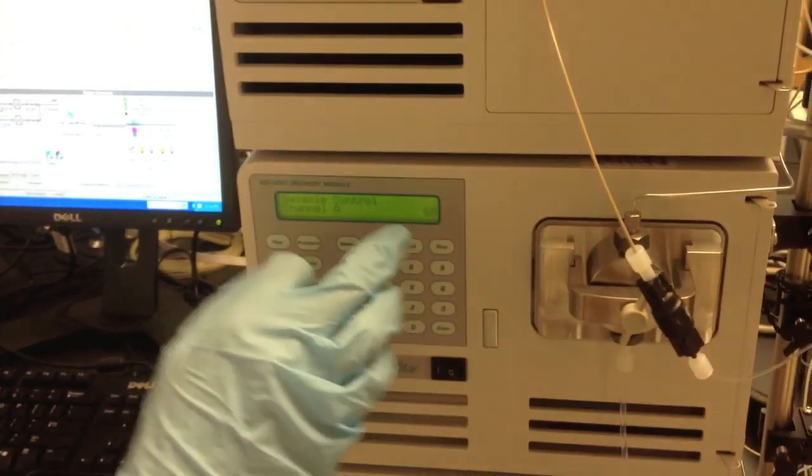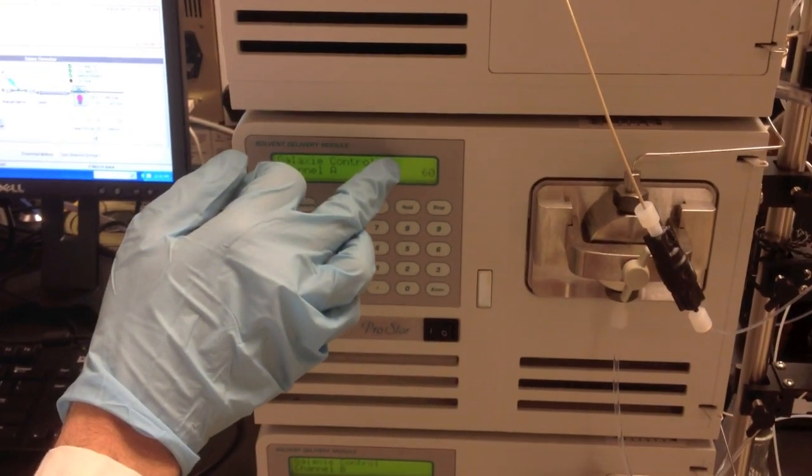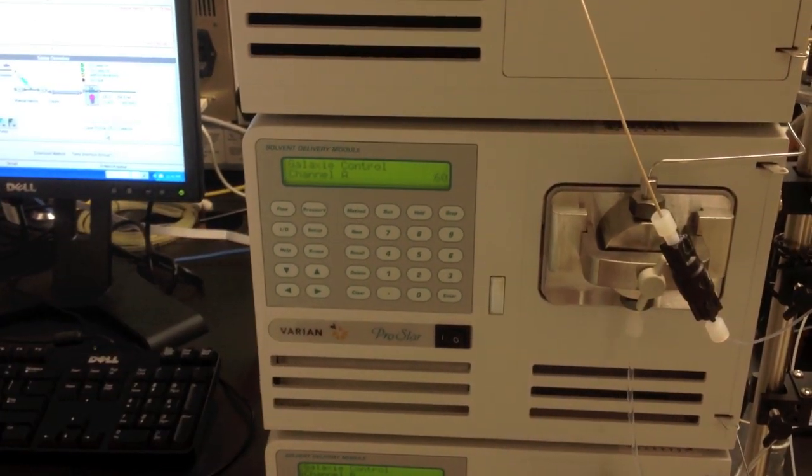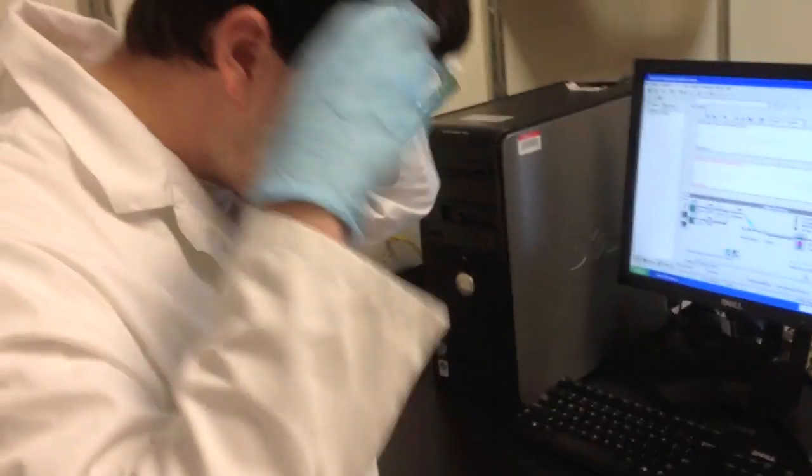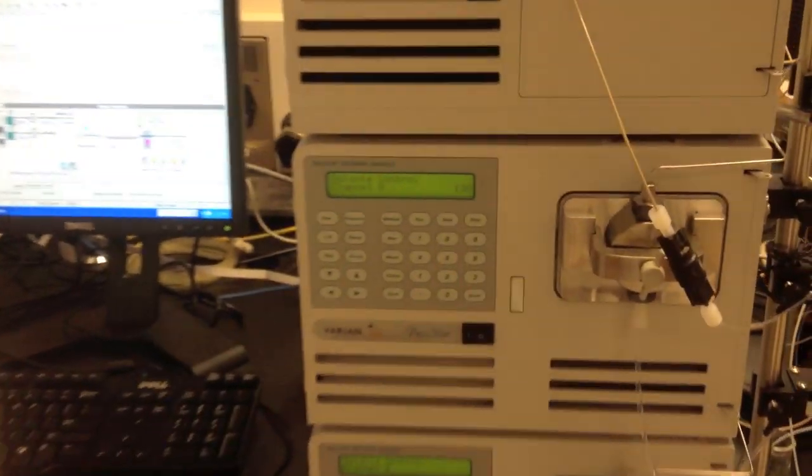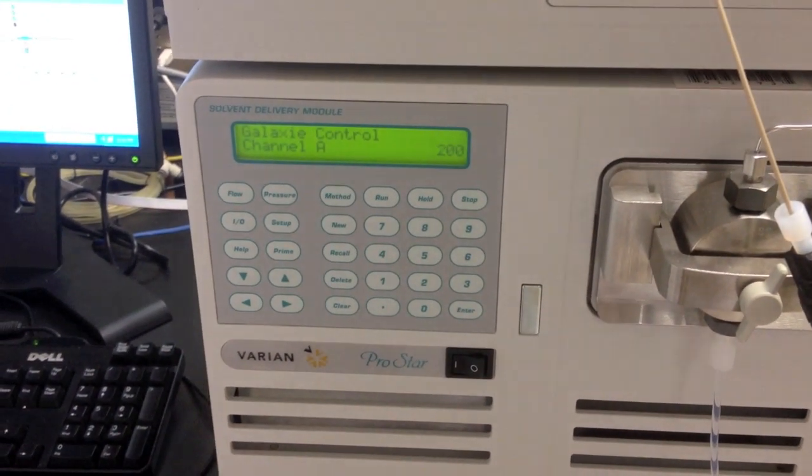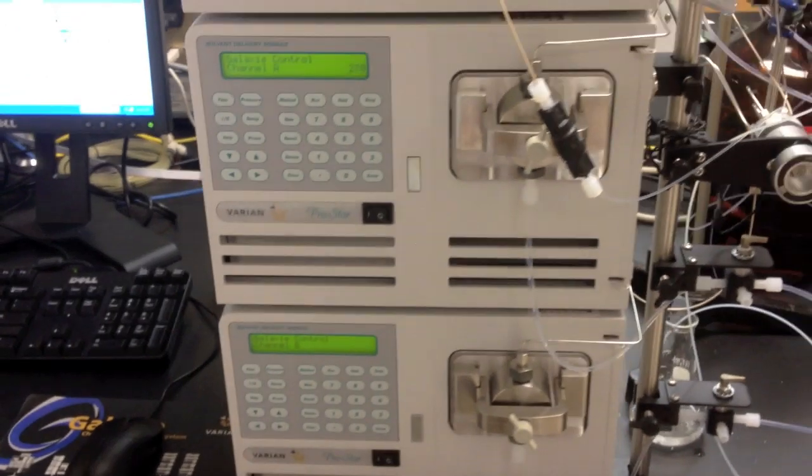So we have to keep an eye on the pounds per square inch. That'll start going up pretty quickly. So at this point, we've got to put on our goggles. This machine will get up to 1600 psi and that's a lot of pressure. So it's rising pretty quickly. So we're going to go prepare our sample.